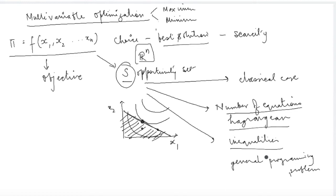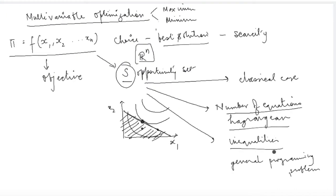We begin with a simple technique, taking a very simple case where we have a given objective function and will understand how to find its maximum or minimum point. Gradually we will also move to other techniques such as the Lagrangian method or linear programming, and we will try to understand in which cases of opportunity set those techniques are used.